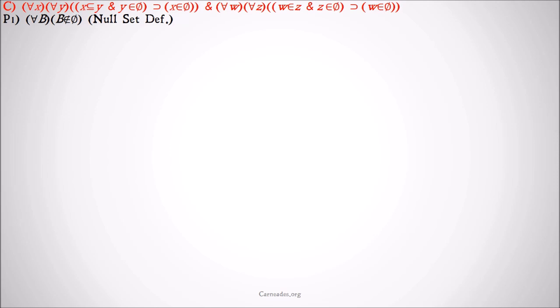So we'll start with our null set definition for all b, b is not a member of the null set. And then we'll instantiate that down to a small b, b is not a member of the null set. Non-membership definition to bring that negation outside.